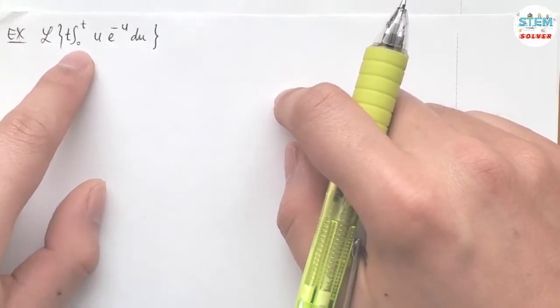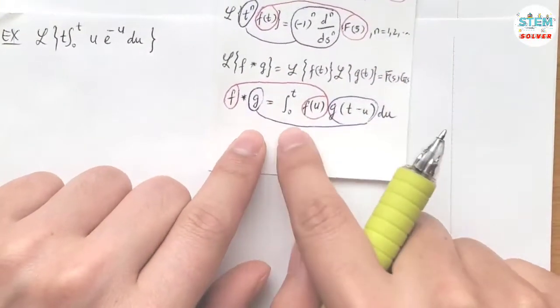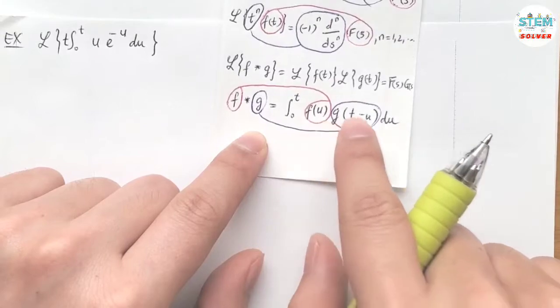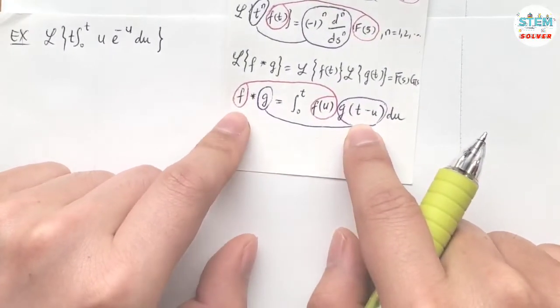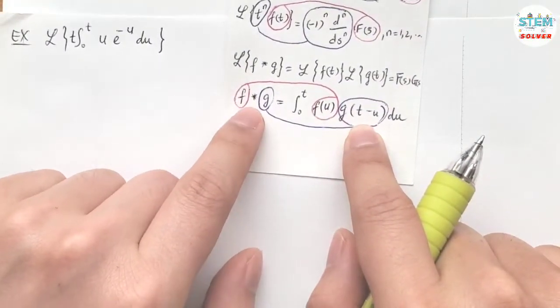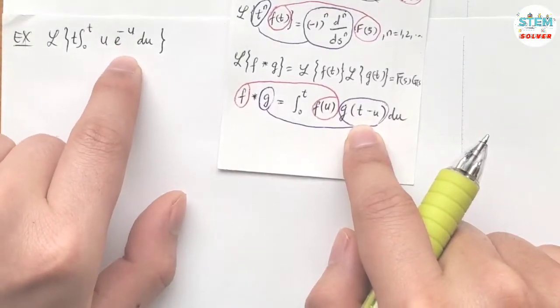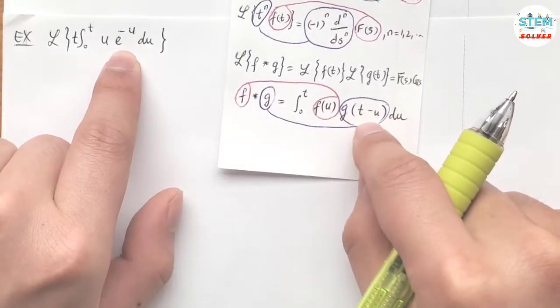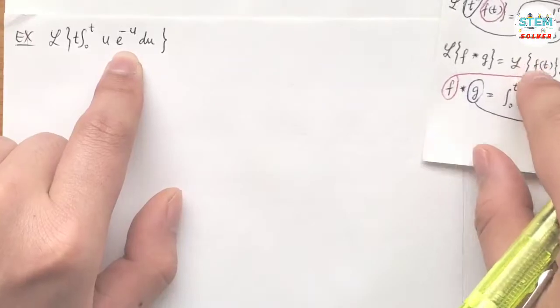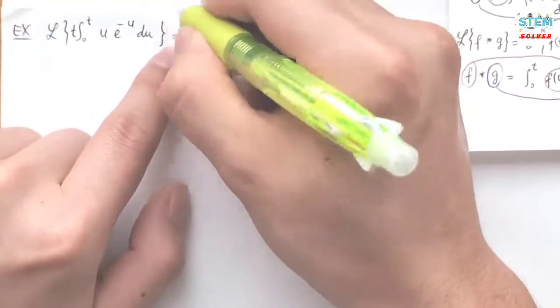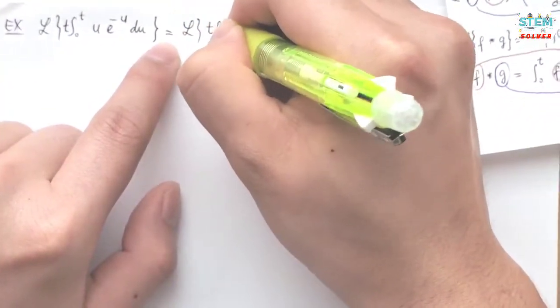So as you can see, we have the integral. And by the definition, the integral of a function in terms of u times the function in terms of t minus u equals f convoluted with g. In this case, we only have the function in terms of u and we're missing t minus u. So basically we do have it, but it is hidden. So let me pull it out for you so that you can see it.